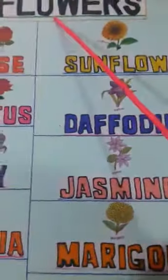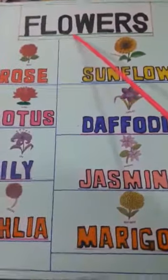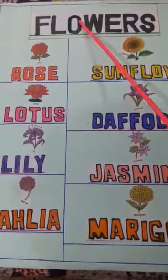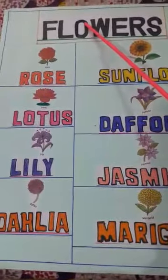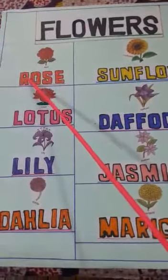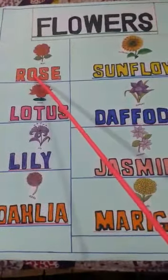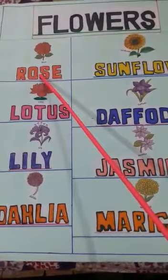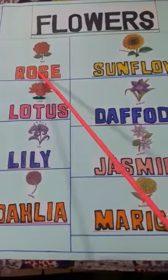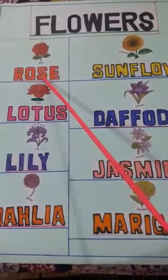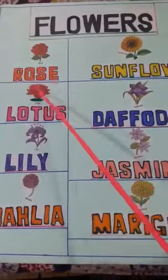Today I will teach you some different flowers. Have you seen the flowers? Now all of you look at the chart. This is a rose, which is called the king of flowers. All of you say the spelling. R-O-S-E. Rose.